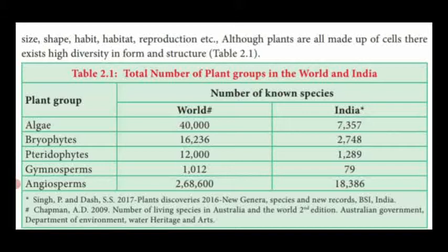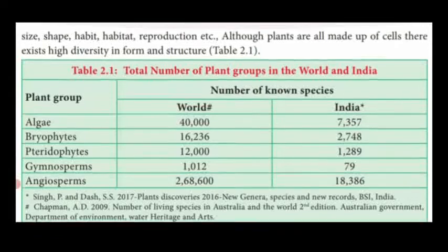The plant group numbers are: algae — 40,000 worldwide, 7,357 in India; bryophytes — 16,000 worldwide, 2,700 in India; pteridophytes — 12,000 worldwide, 1,289 in India; gymnosperms — 1,012 worldwide, 79 in India; and angiospermic plants — 2,68,600 worldwide, 18,386 in India. These are the different varieties of plant groups found all over the world and in India.